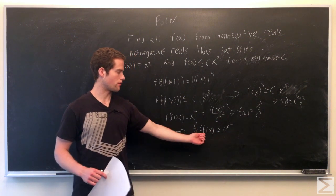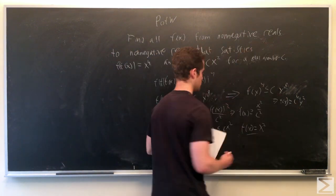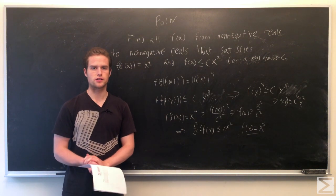And so we have f of x must, in fact, equal x squared for each x. And so we're left with our answer, which is f of x must equal x squared.